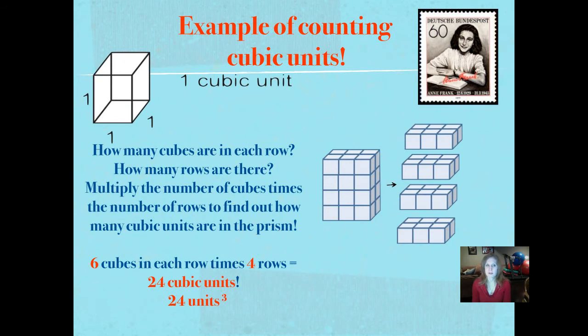Example of counting cubic units. You can see there's the one cubic unit, but I wanted you to see that in 3D. When we look at that figure to the right, I've actually drawn the squares out for you so that you can see them. First, you look at how many cubes are in each row, and you can see that by looking at that top row. You can count them: 1, 2, 3, 4, 5, 6. There's 6 cubic units in each row. And then how many rows are there? There are 4 rows.